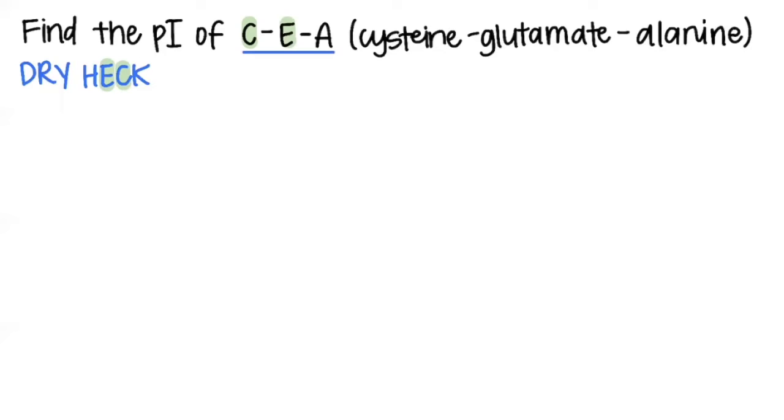When an amino acid doesn't have an ionizable R group or side chain, its structure does not contribute to the overall calculation of pI, and we'll see that in a little bit.